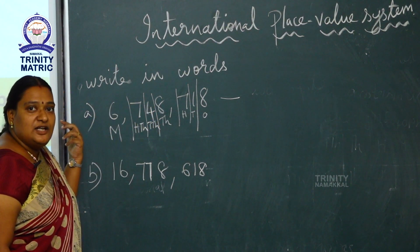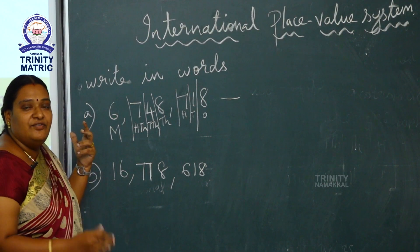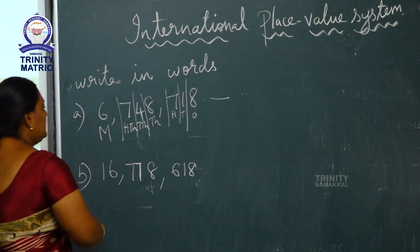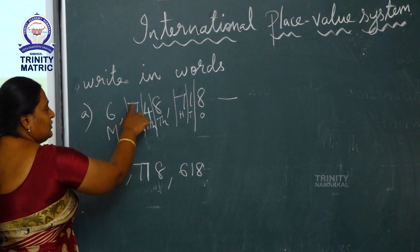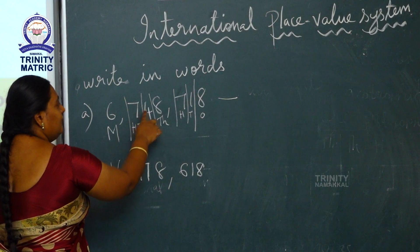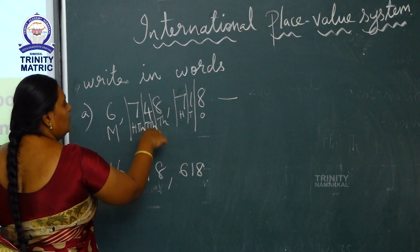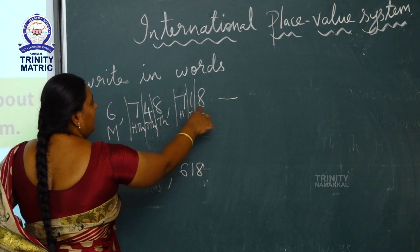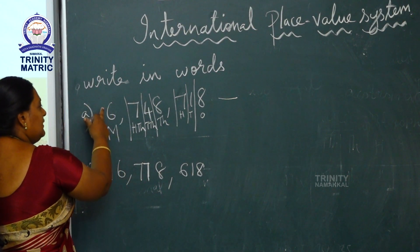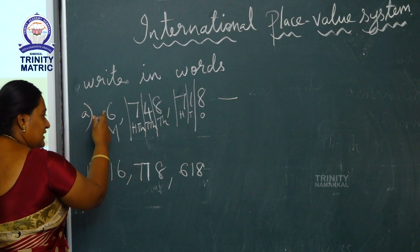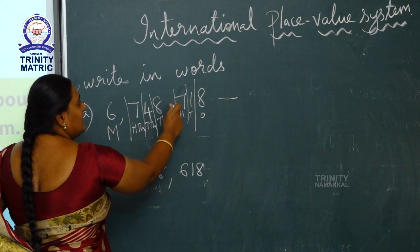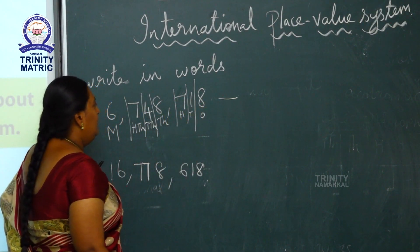Each and every group of three digits we have to put a comma. So write the number name for this: six million — gather three digits — seven hundred and forty-eight thousand, seven hundred and eighteen. So 6,748,718 — that's the number name.